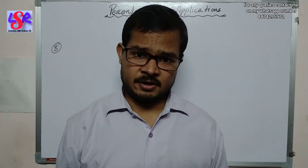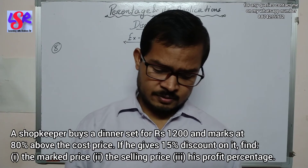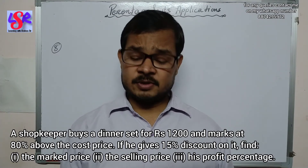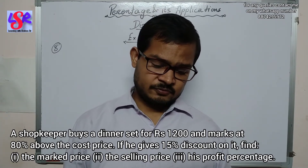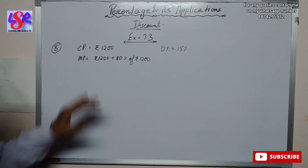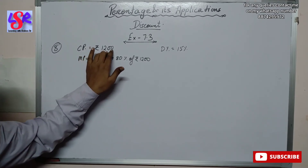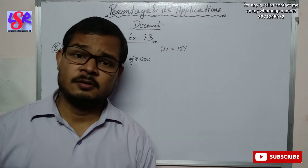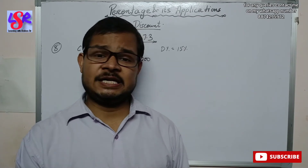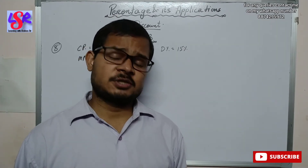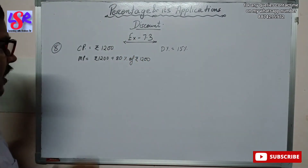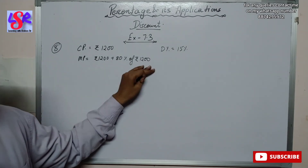Now question eight: a shopkeeper buys a dinner set for rupees 1200, marks it 80% above the cost price, and gives a 15% discount. Find the mark price, selling price, and profit percent. The shopkeeper increases the price by 80% to set the mark price. So Mark Price = 1200 + 80% of 1200.